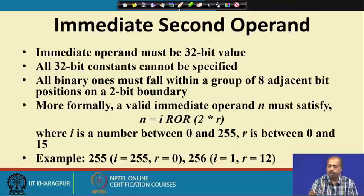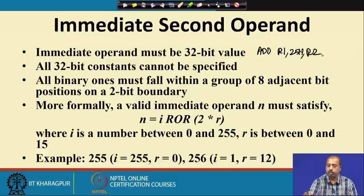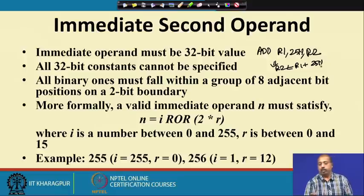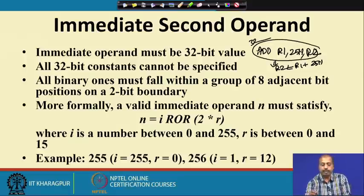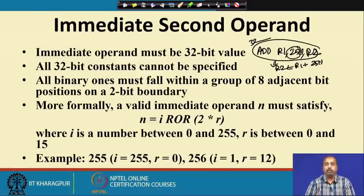It is like this: suppose I have an ADD instruction — ADD R1, some 32-bit value say 0x25, and the result is stored in R2. That means R2 will get R1 plus 0x25. The whole instruction encoding is 32 bits and it says that this immediate operand 0x25 should also be coded as a 32-bit number, and that is a problem.